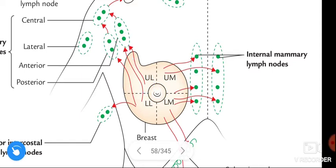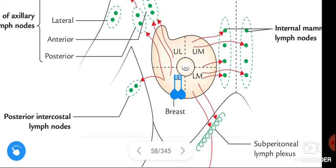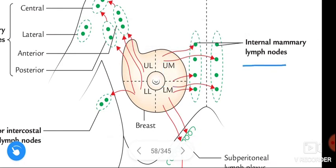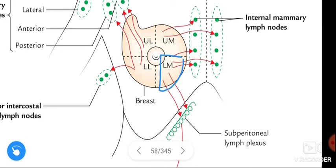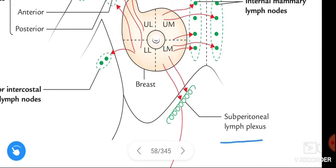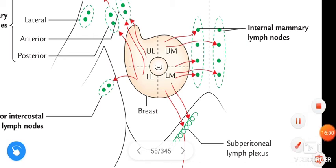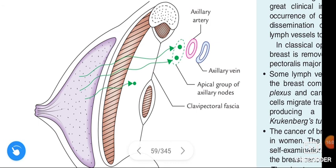In summary: lymph from the upper lateral quadrant drains into the anterior axillary nodes; from the lower lateral quadrant into the posterior intercostal lymph nodes; from the upper medial quadrant into the internal mammary lymph nodes; from the lower medial quadrant into the subperitoneal and subdiaphragmatic lymph plexuses; and from the deep surface of the breast into the apical group of axillary lymph nodes by crossing the pectoralis major and clavipectoral fascia.